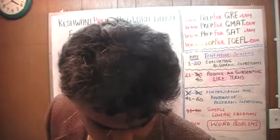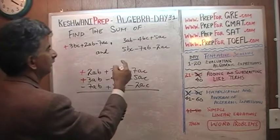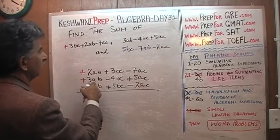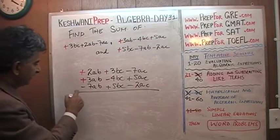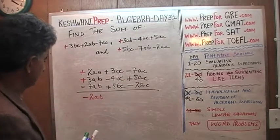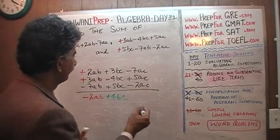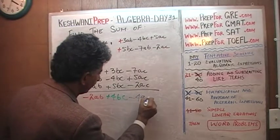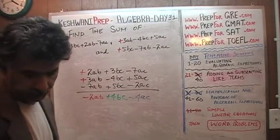Let's add them up and see what we get. For the AB terms: 2AB has a positive sign, 3AB has a positive sign, so 2 plus 3 is 5, and 5 minus 7 gives us negative 2AB. For the BC terms: negative 7 and negative 2 is negative 9, and negative 9 plus 5 gives us negative 4. So the answer is negative 2AB plus 4BC minus 4AC.